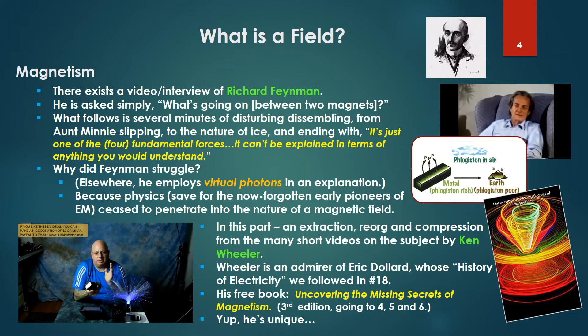In this part I'll be doing an extraction, a reorg, and a compression of the many short videos on the subject by Ken Wheeler. Wheeler is an admirer of Eric Dollard, whose history of electricity we followed in number 18. Ken's free book, Uncovering the Missing Secrets of Magnetism, is available on Amazon in its third edition. One can start with the videos, but it's probably better to start with Dollard, and ultimately one needs to go to the book — there's a great deal of material. However, it's a difficult mind trip requiring a great deal of mental concentration, visualization, and penetration of the very difficult and different vision of physics he's presenting.